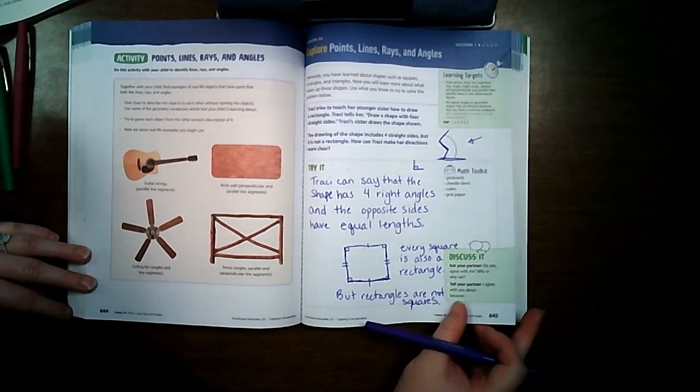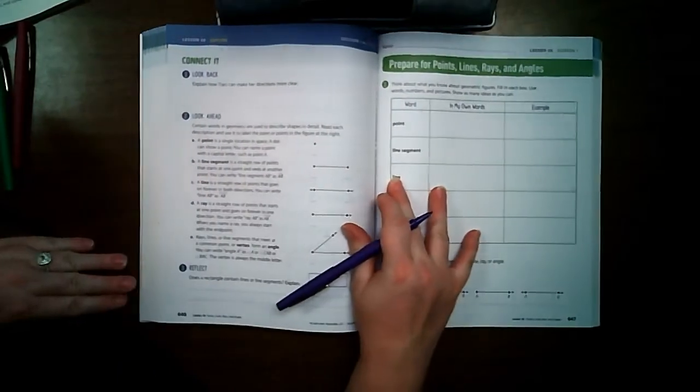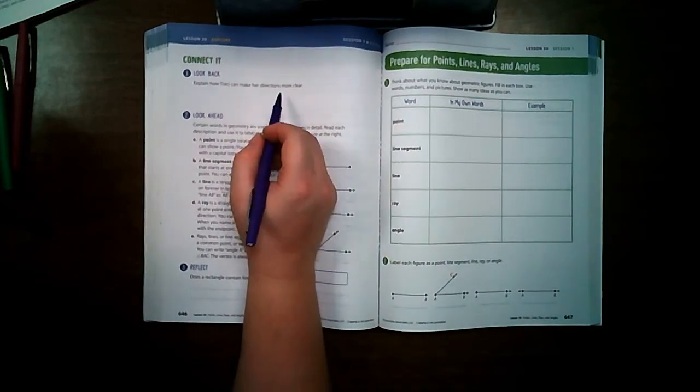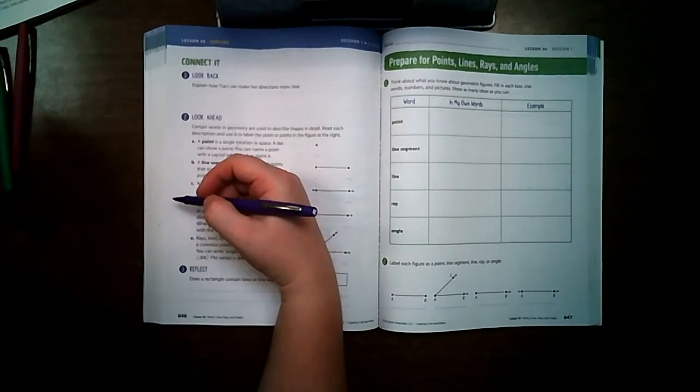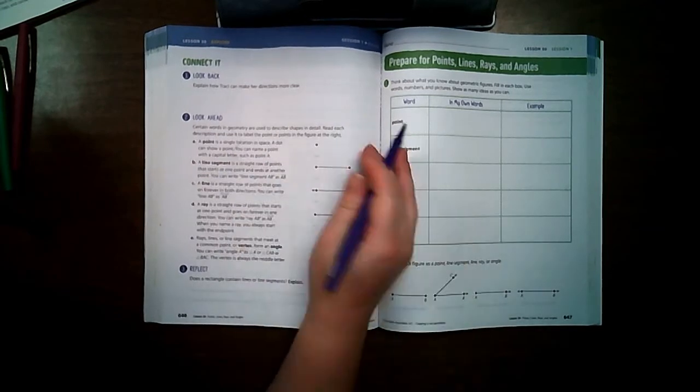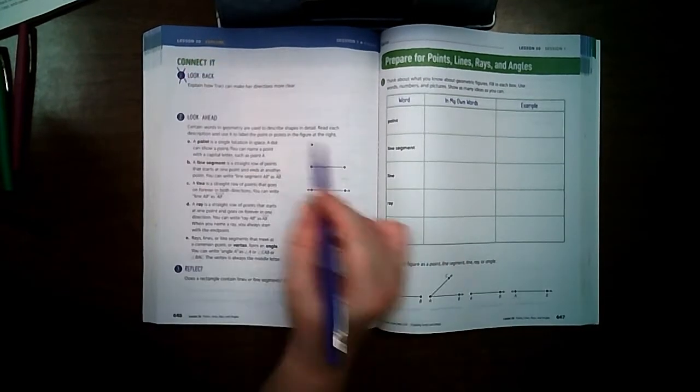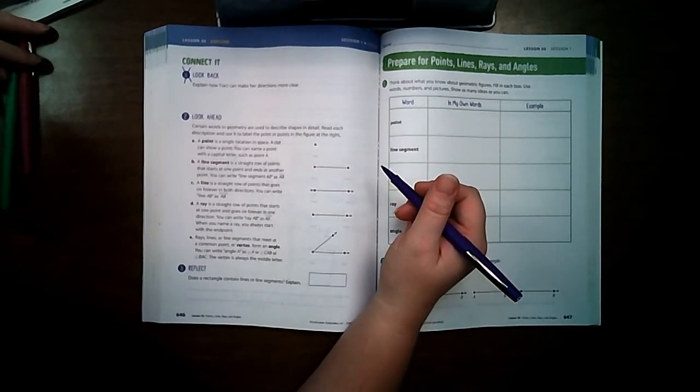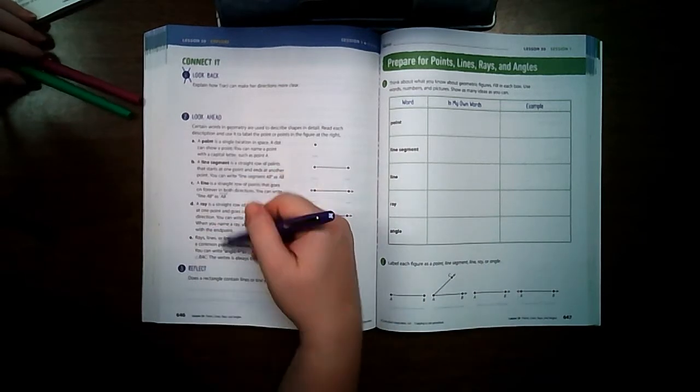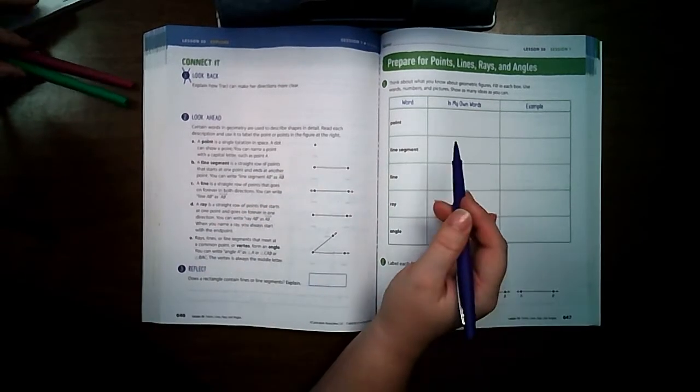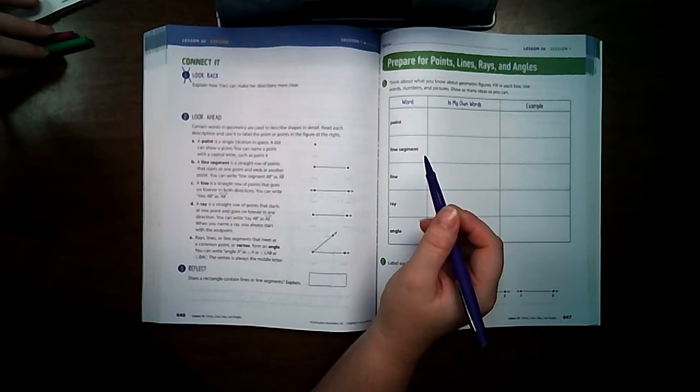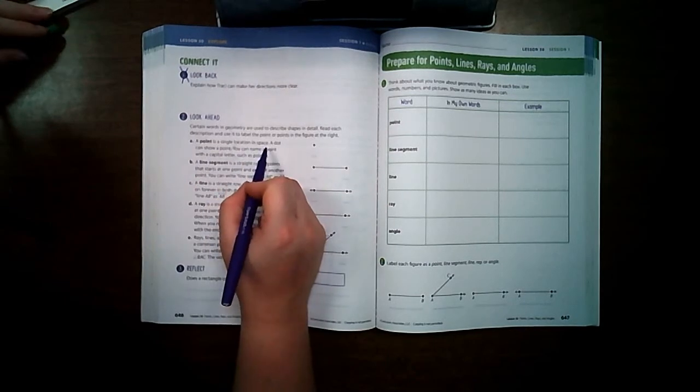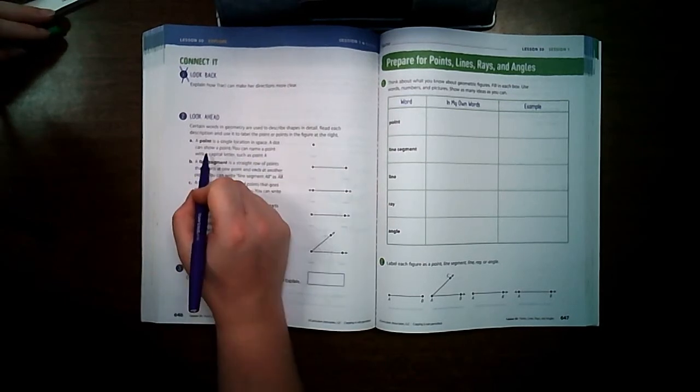Let's go to page 646. Explain how Tracy can make her directions more clear—we gave our answer on the previous page, so let's skip number one and go to number two. In geometry there are a lot of vocabulary words, and they are important. We're going to go over some of these vocabulary words. Most of these you should have learned when you were in third grade, but it's a good refresher.